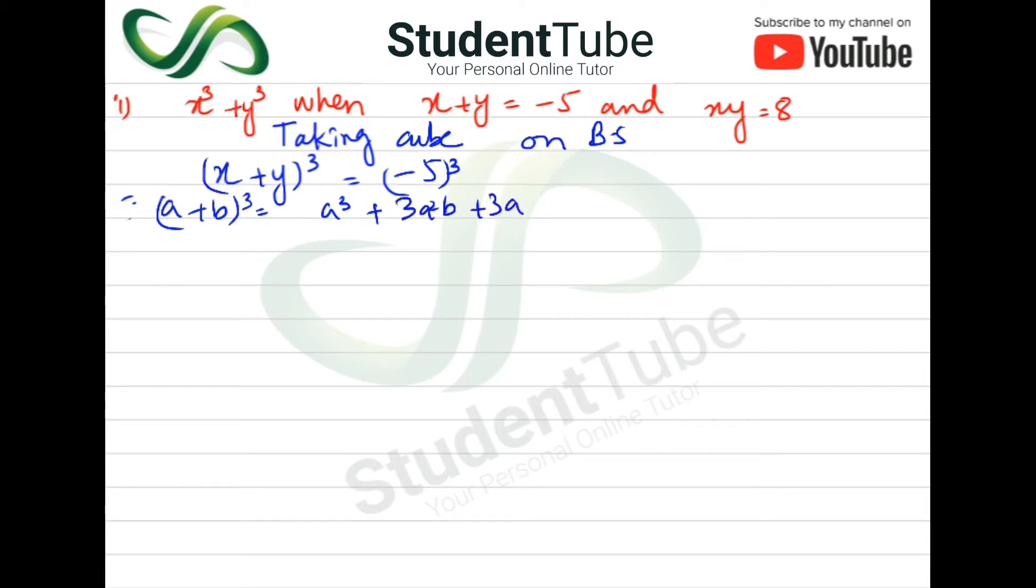Now we will convert it in x terms, so this will be x³ + 3x²y + 3xy² + y³ is equal to -125. The minus sign appears because 5 is raised to the power 3, and 3 is an odd number. If it is an even number, the minus sign will be removed.